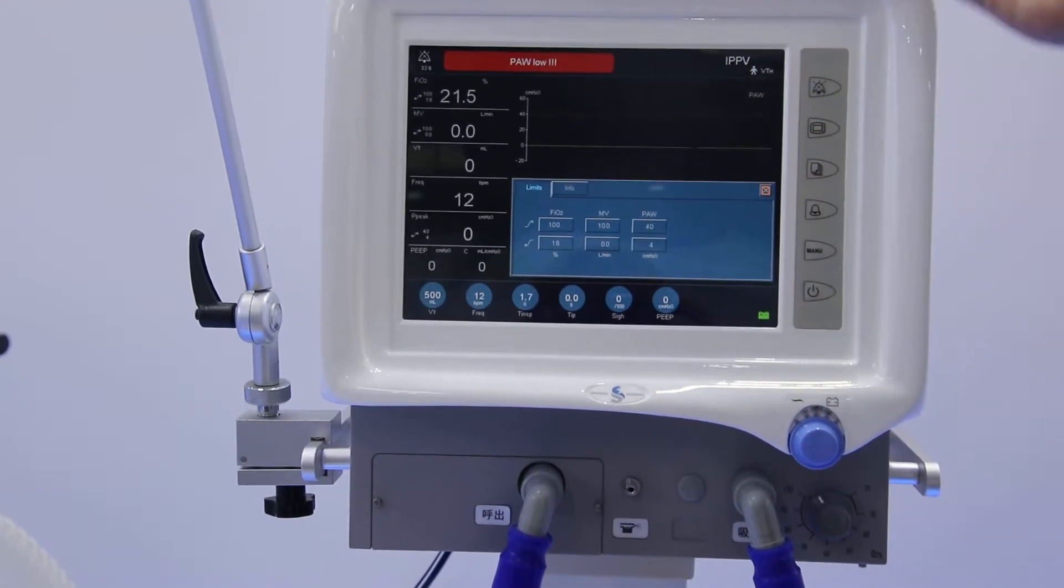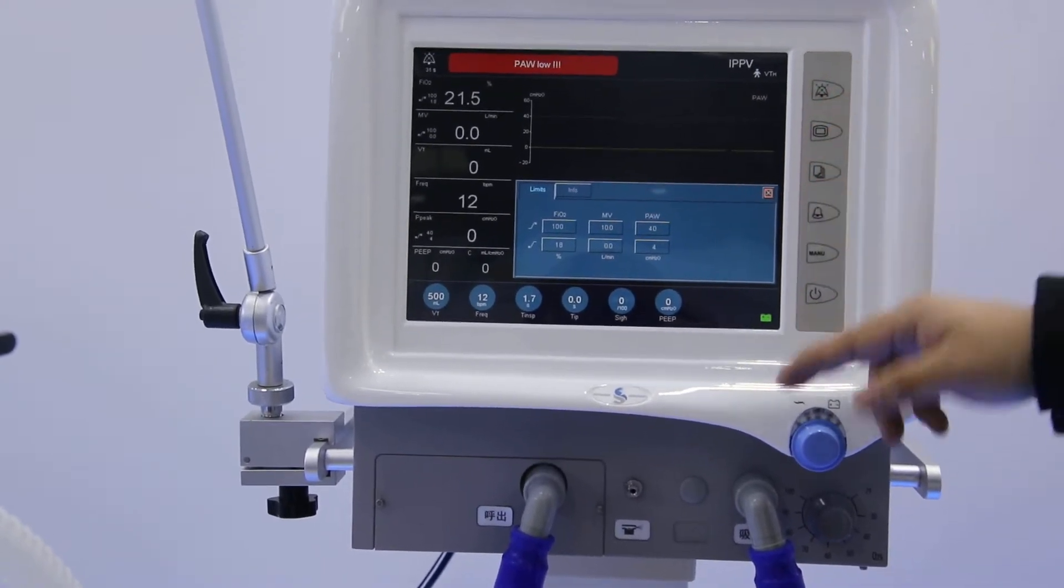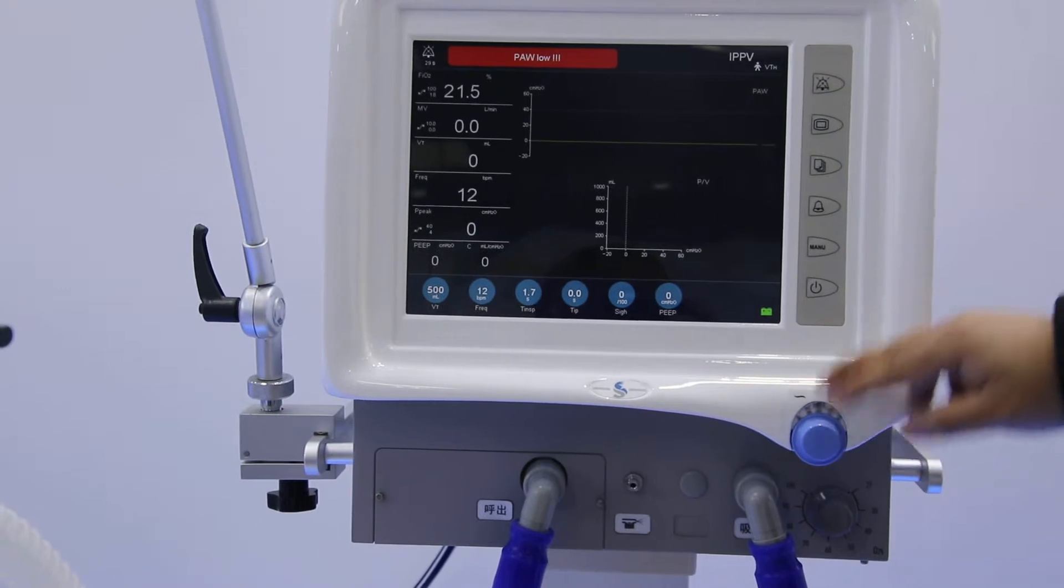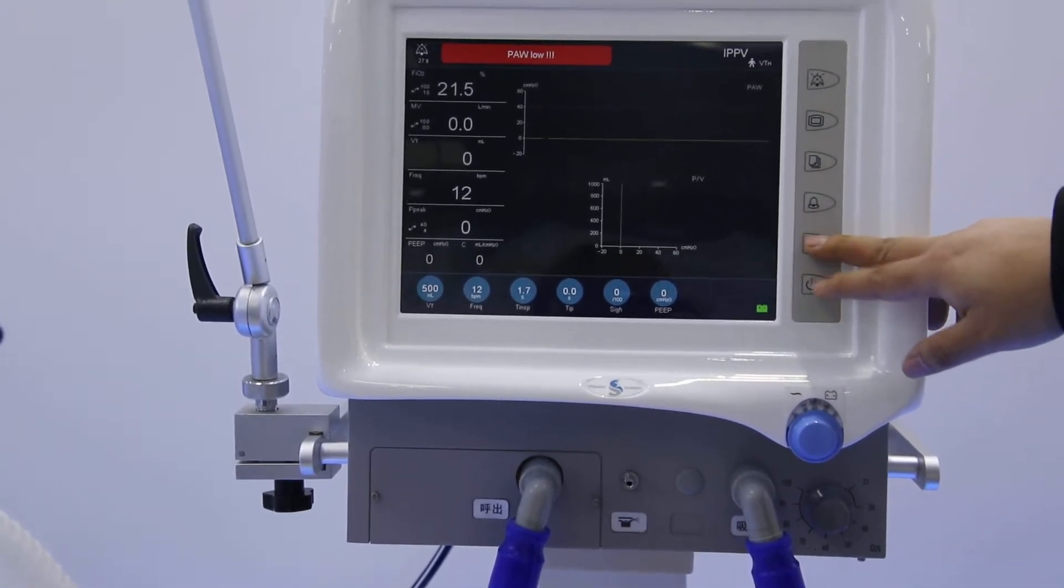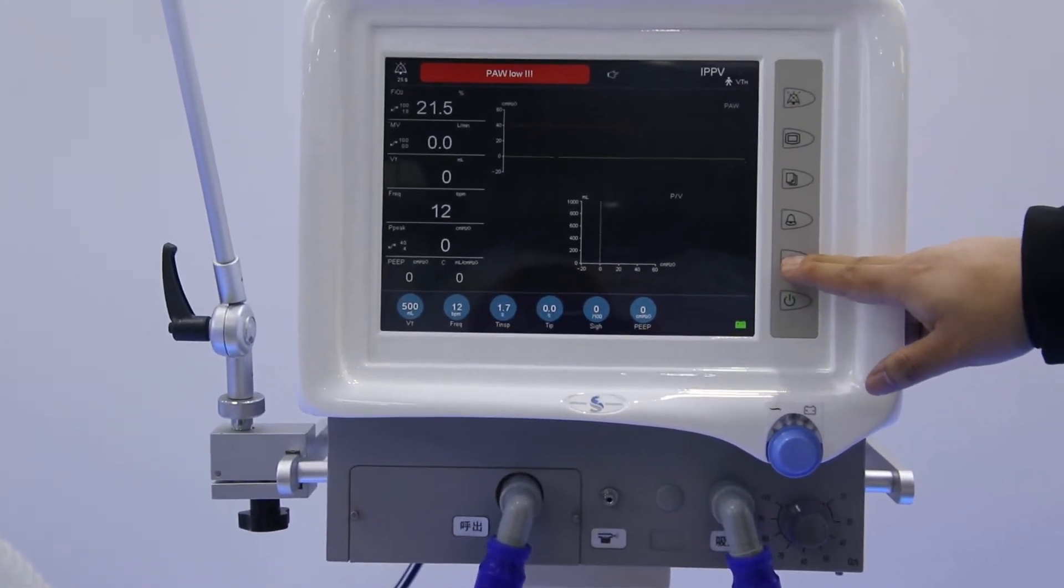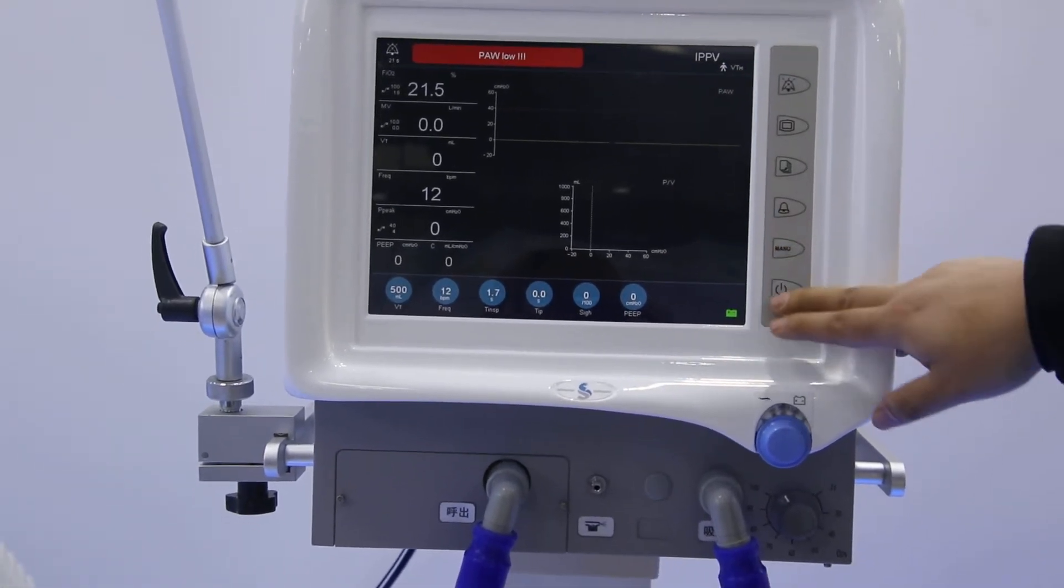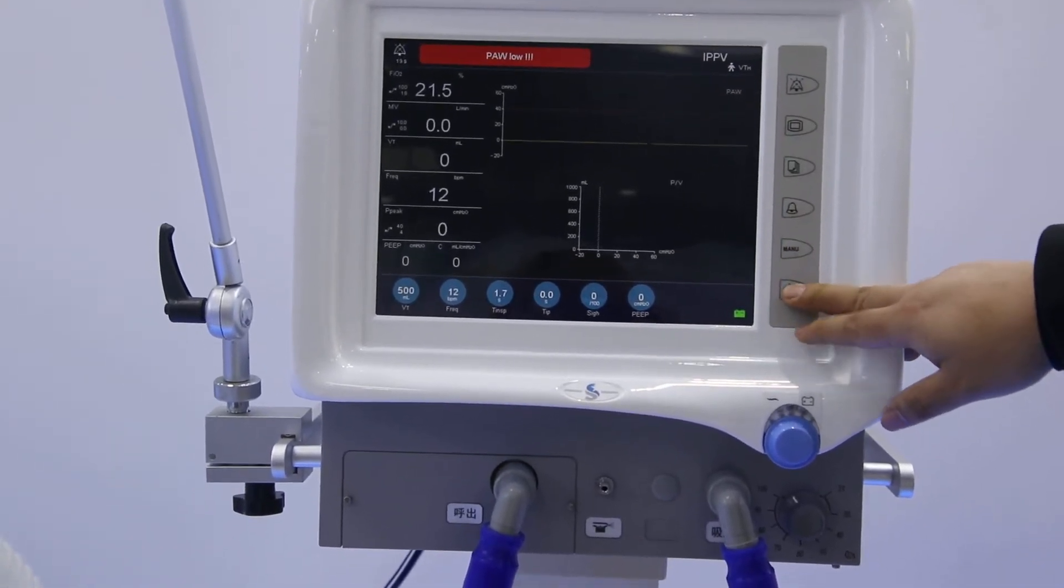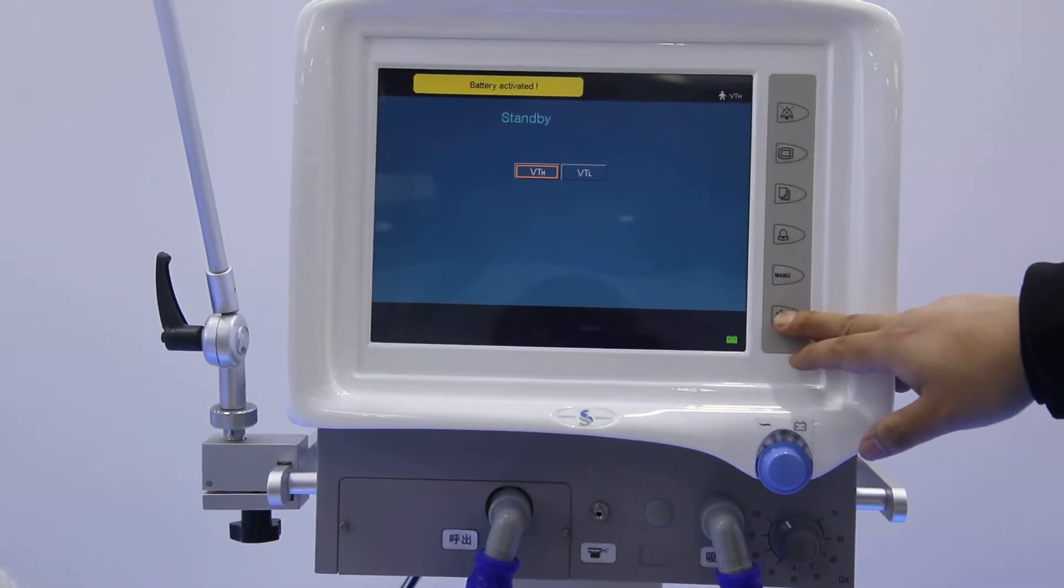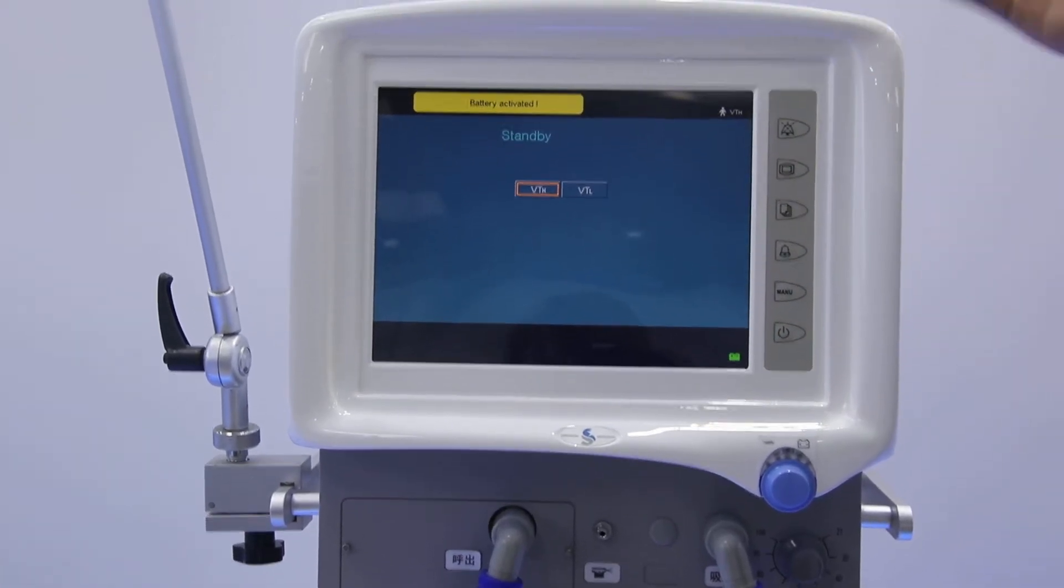And here is the limits. The upper limit and lower limit we can change for different alarming functions. The fifth button here is the manual button. Once we press it, there will be a symbol on the screen. That means manual ventilation. The last button, we press it for three seconds, then it will enter into the standby interface again to change to another patient.